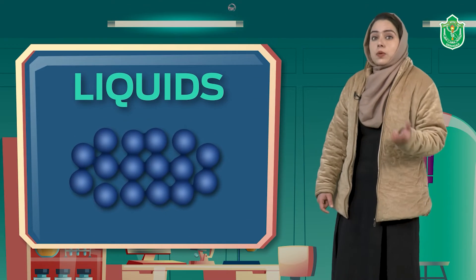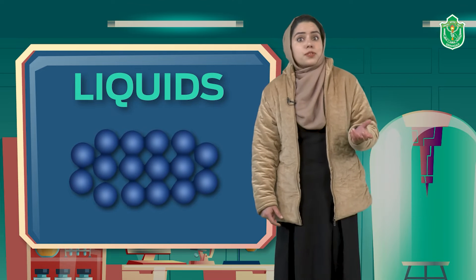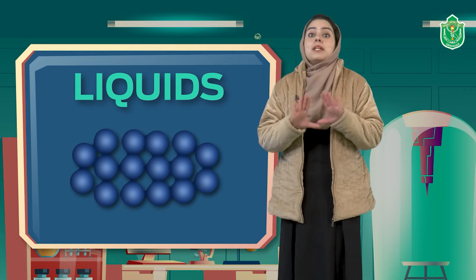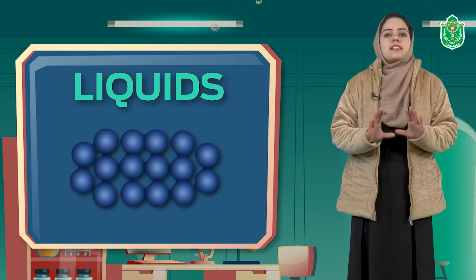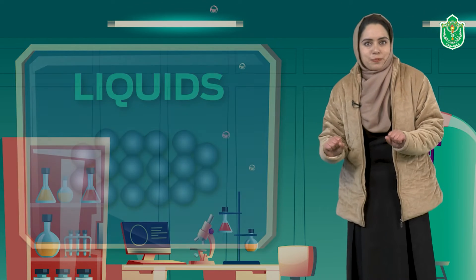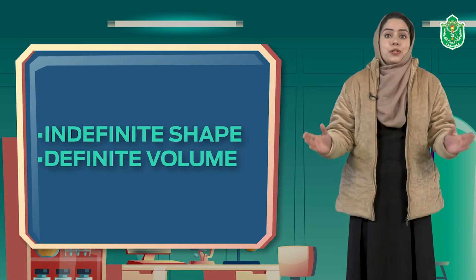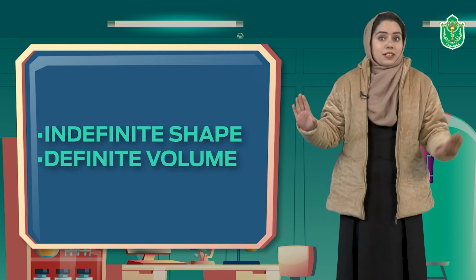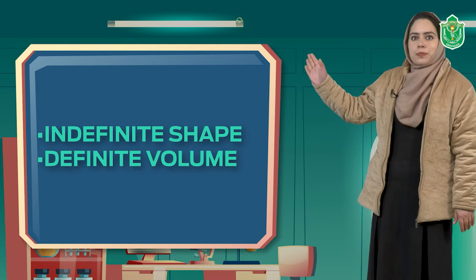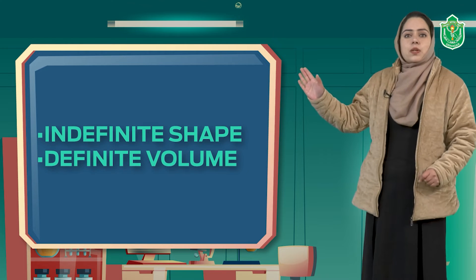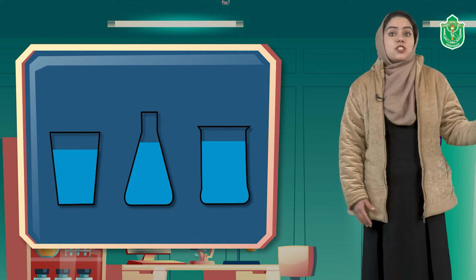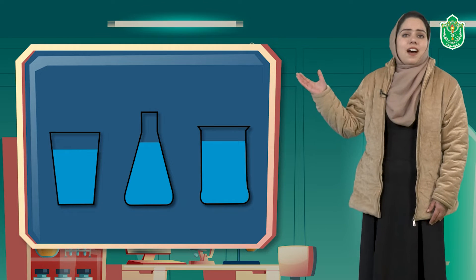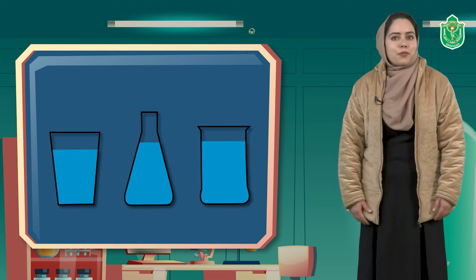Similarly, liquids — they also have a strong force of attraction among their molecules, but it is not as strong as in solids. Their particles are loosely packed. They have a definite volume, but shape is not definite. If we put liquids in different containers, they will take up the shape of the container. For example, water — put it in a jar or put it in a glass, it will take up the shape of the container.